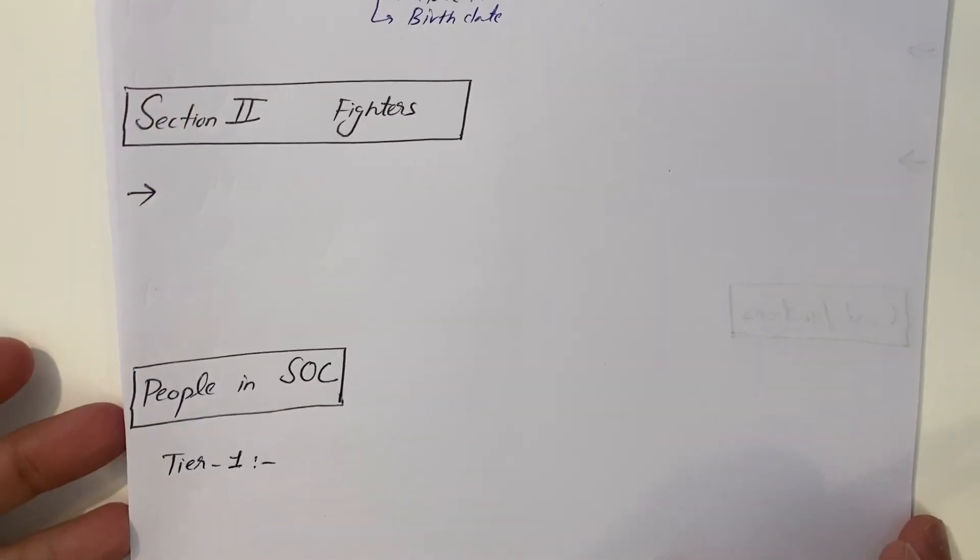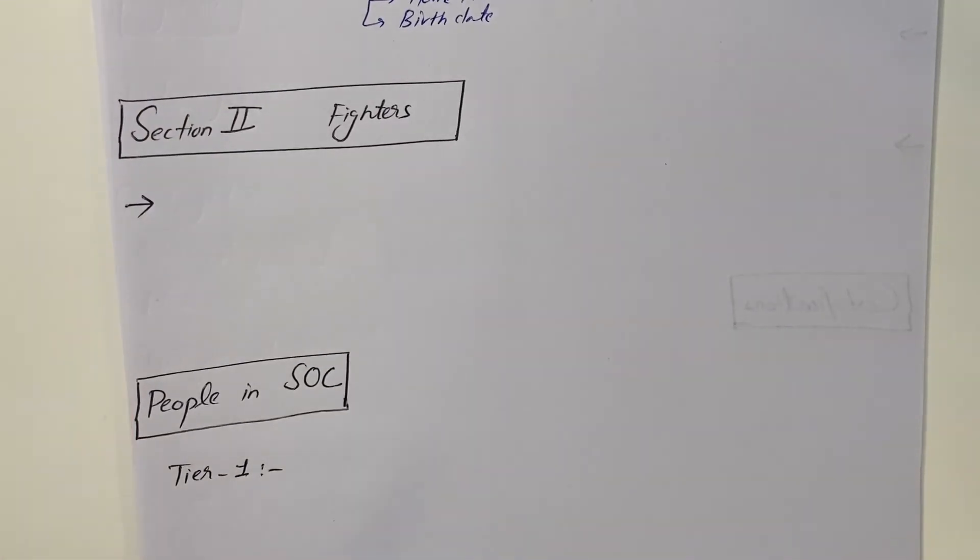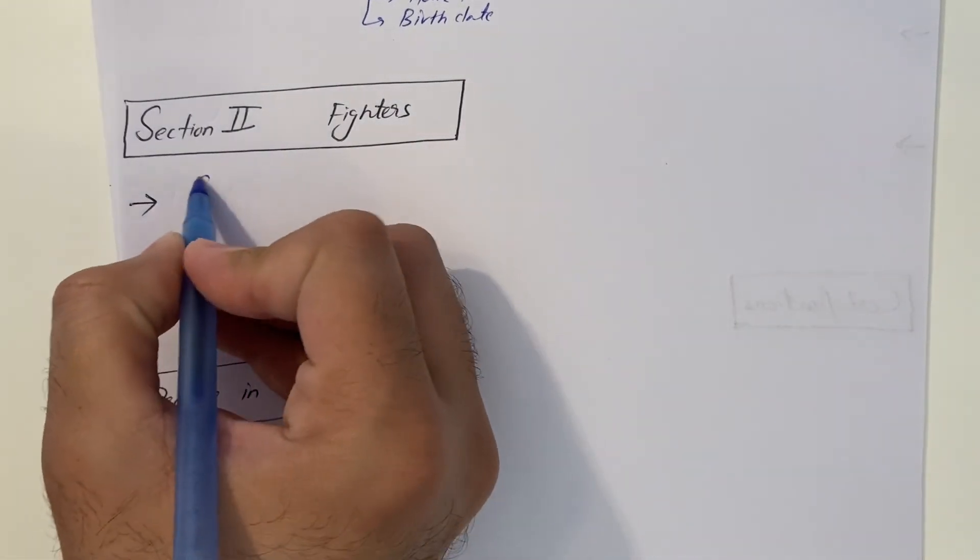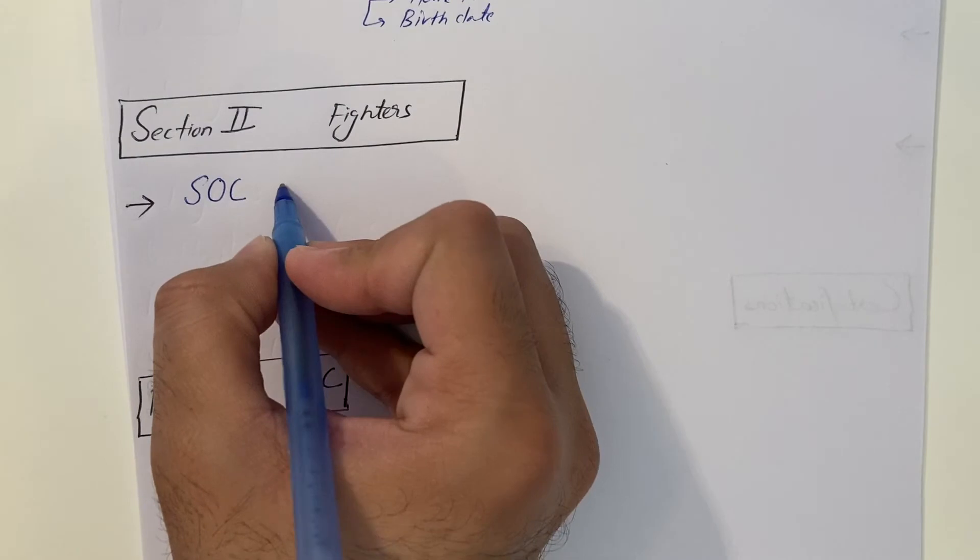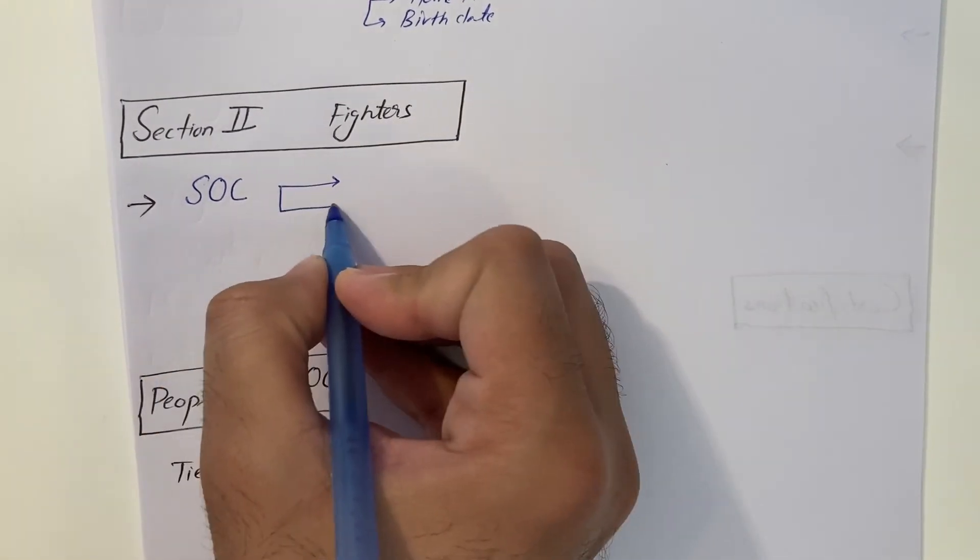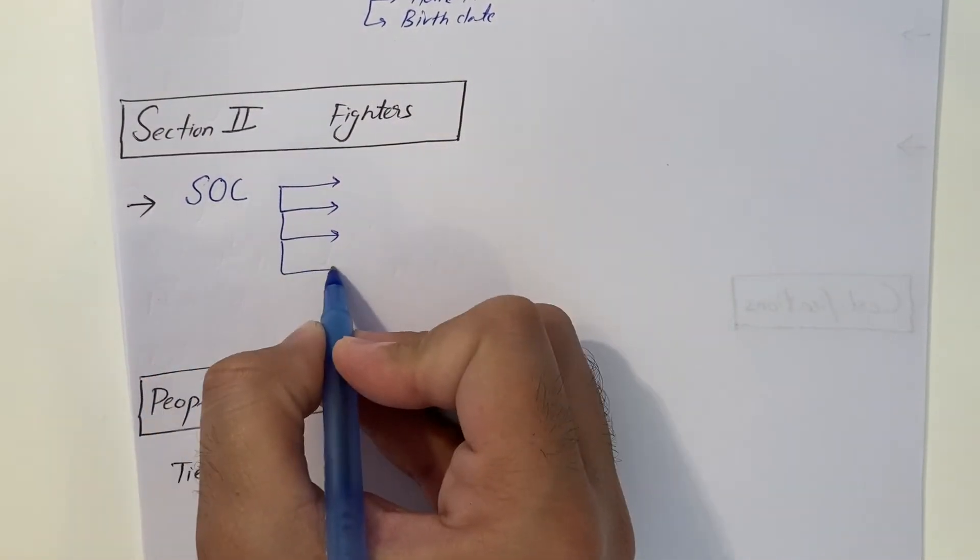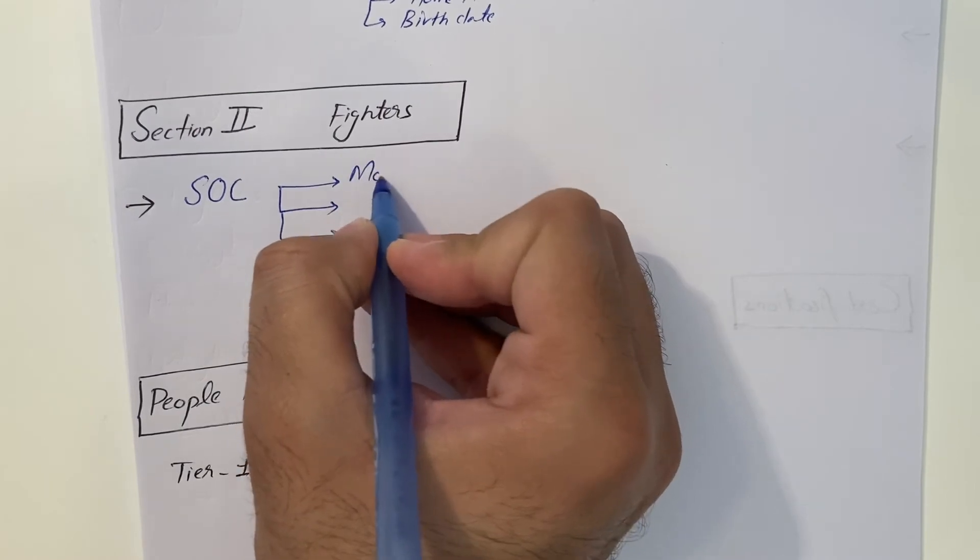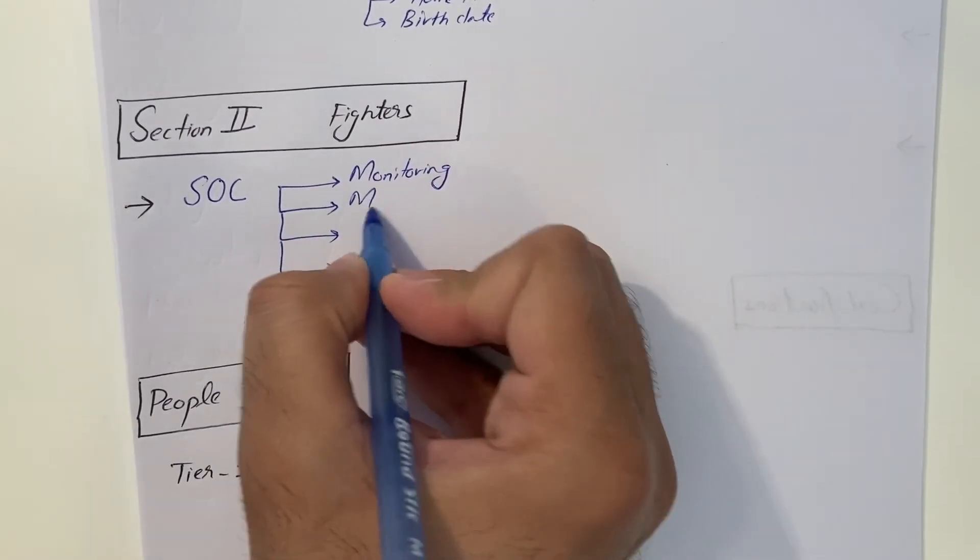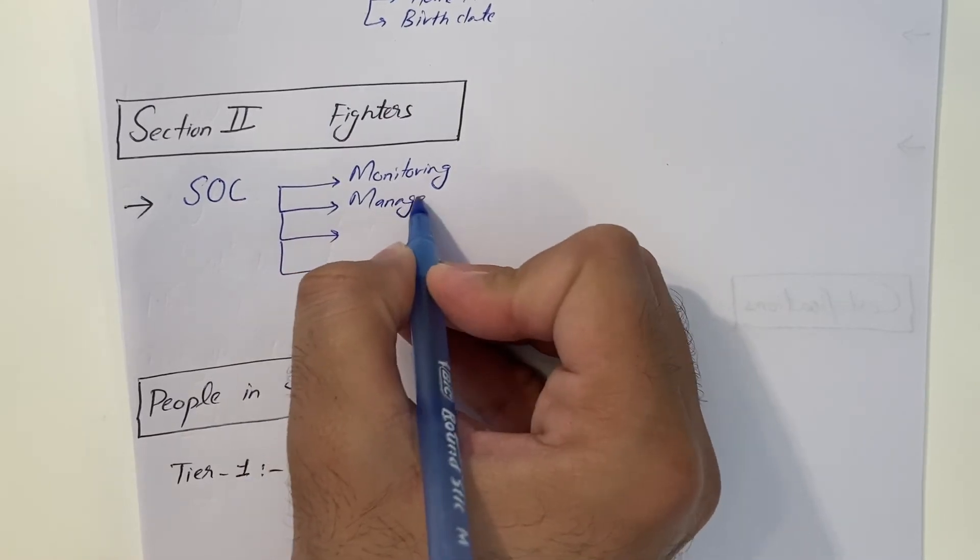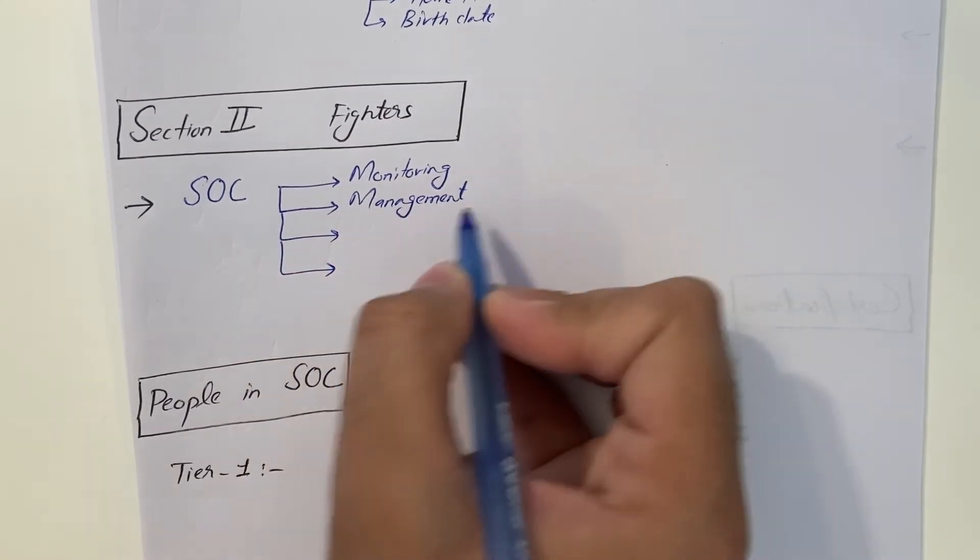Let's move to our second section, which is the fighters. As I mentioned earlier, in order to avoid, in order to protect our IT infrastructure, we are dependent on Security Operations Center. Security Operations Center, they provide four types of services.